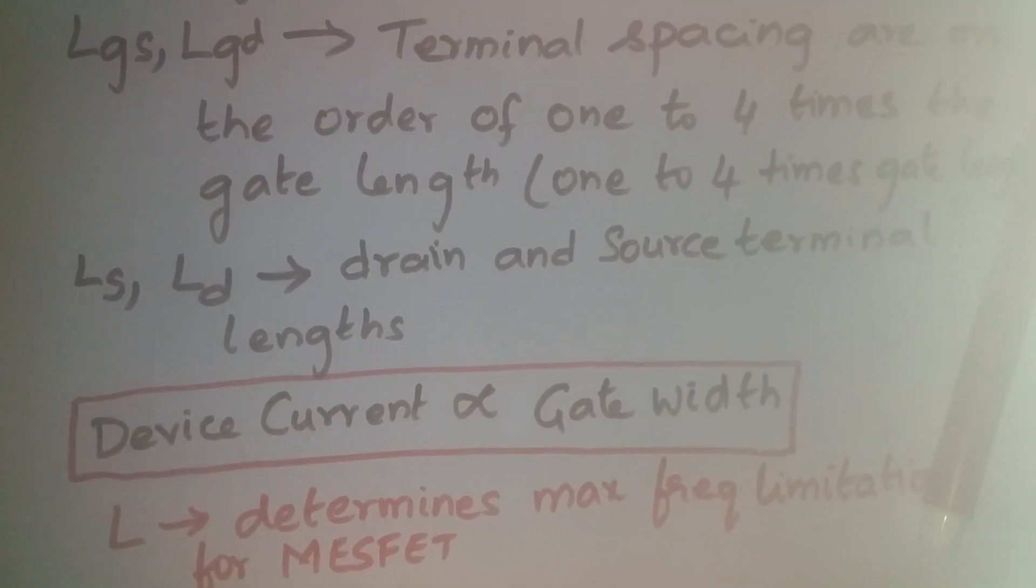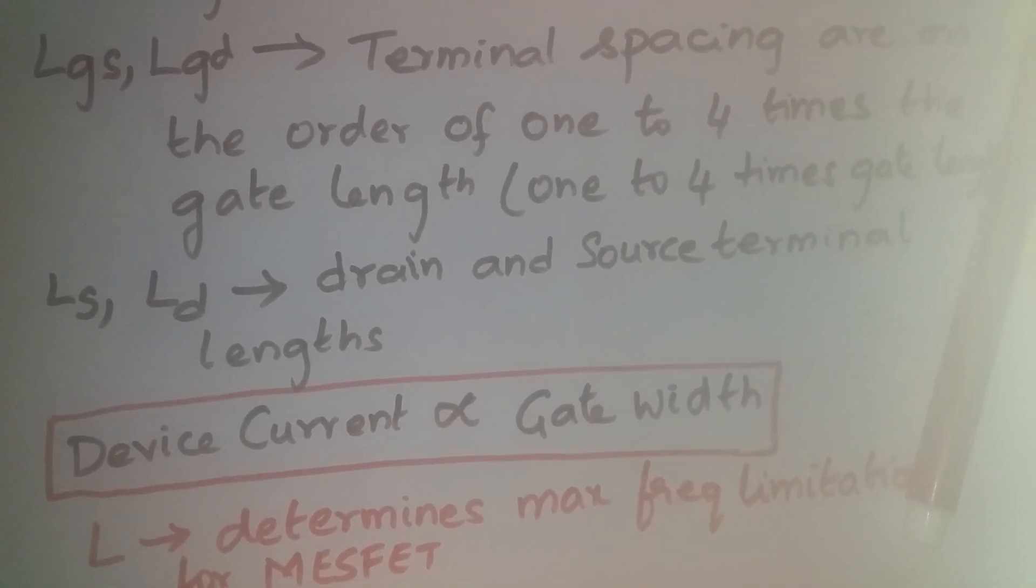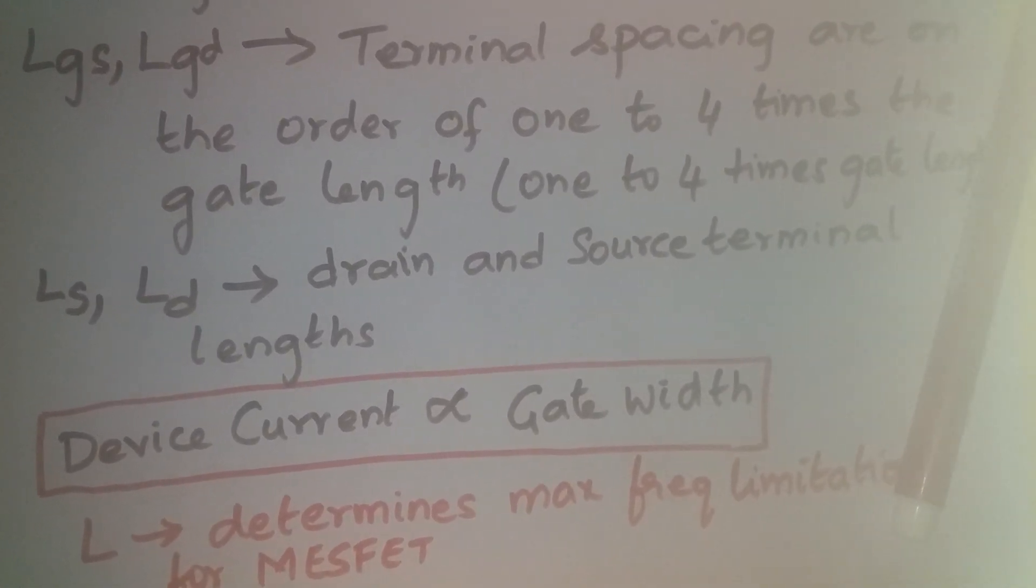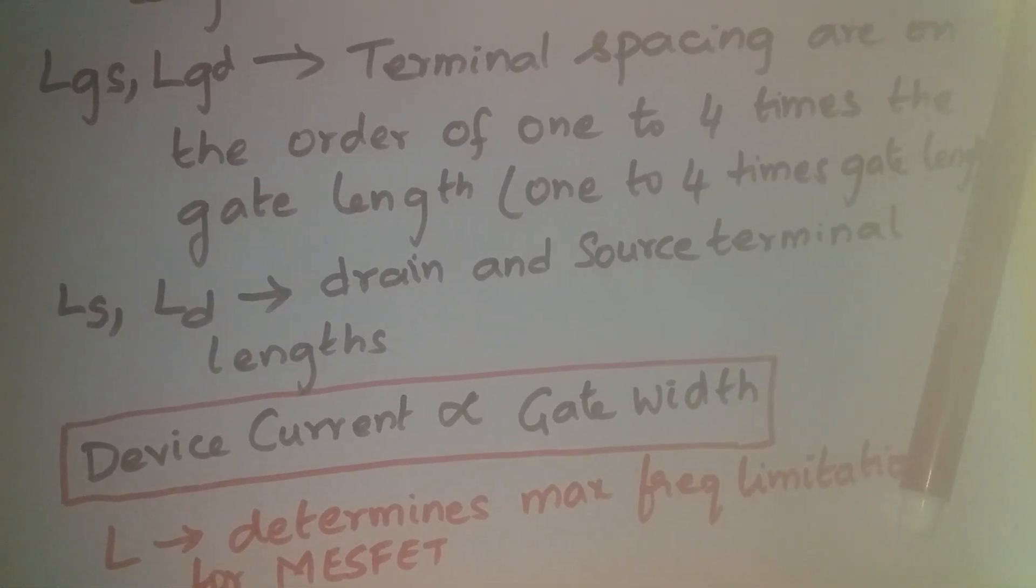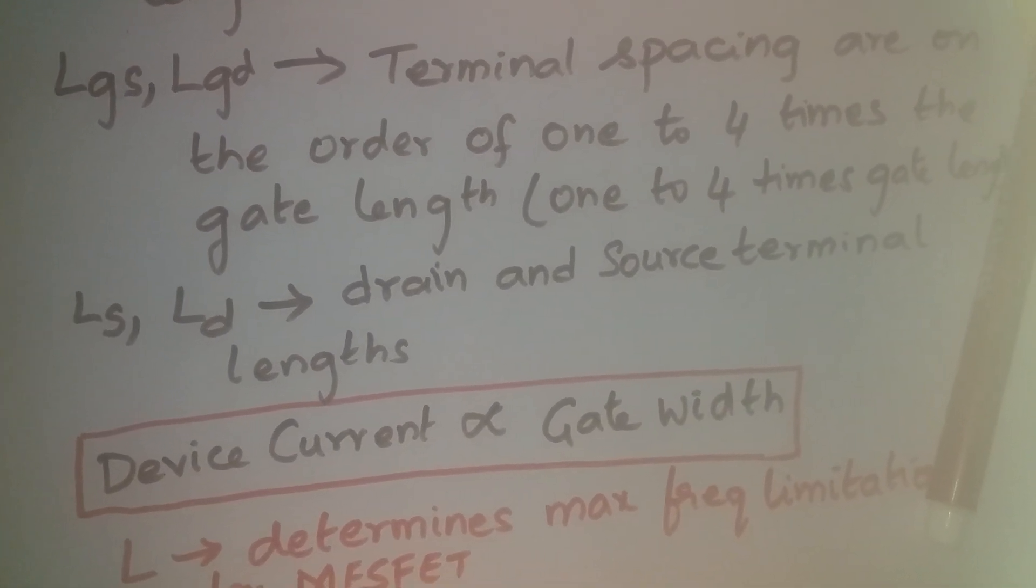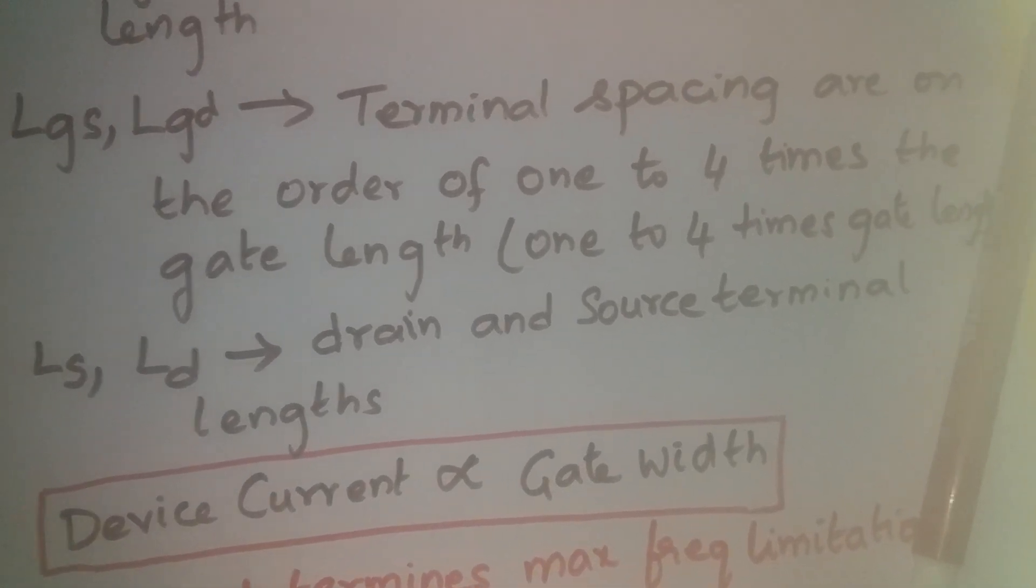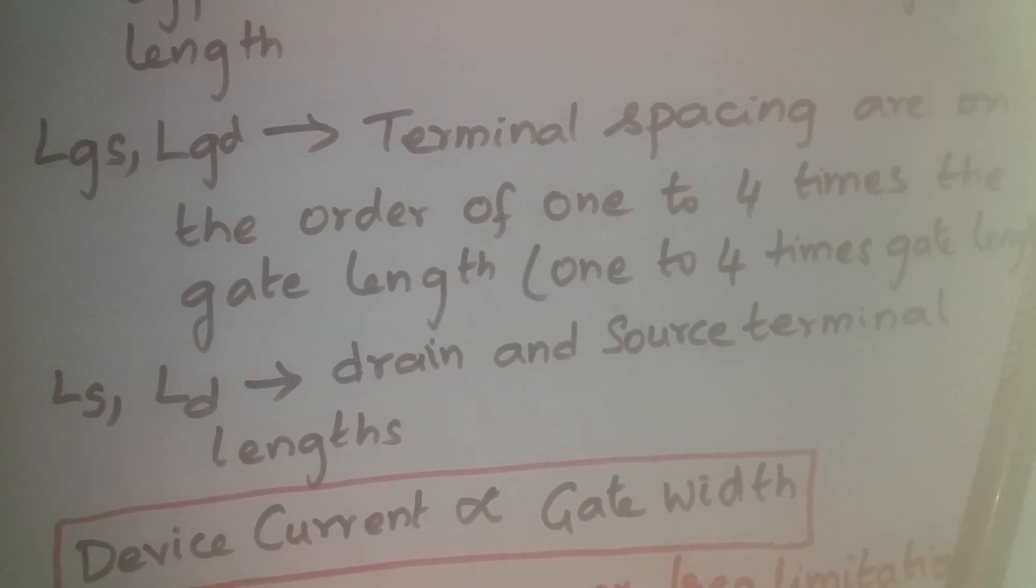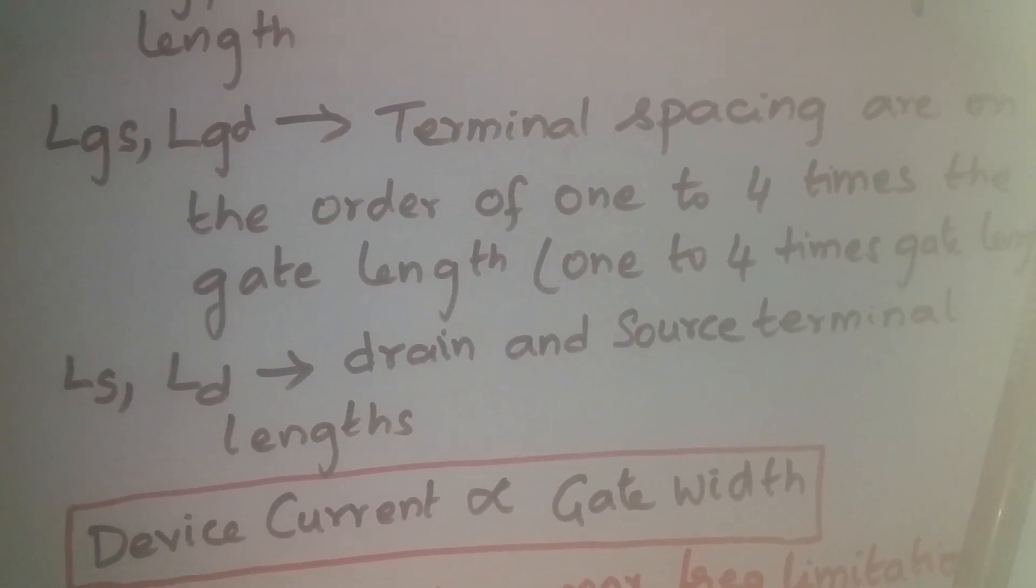So any MESFET is normally specified like this. For example, if you call it as 0.1 by 300 micrometer MESFET, it means that the gate length is 0.1 micrometer and gate width is 300 micrometer. That shows how important these characteristics are.